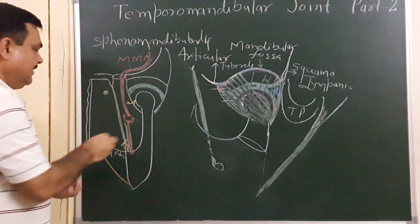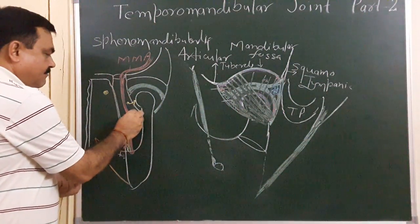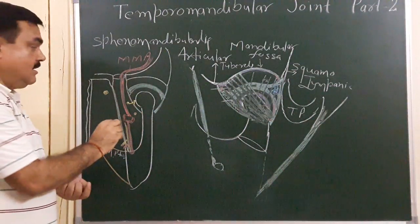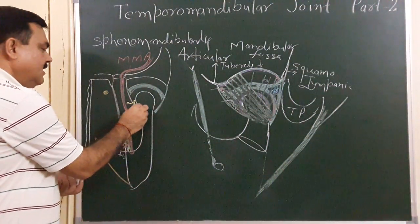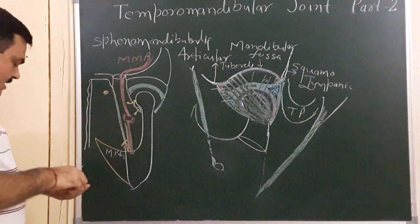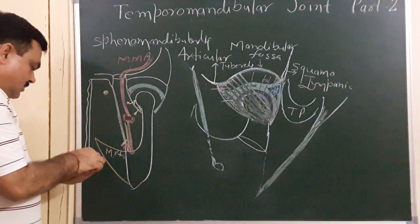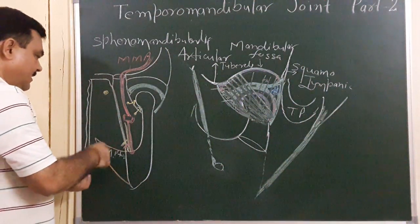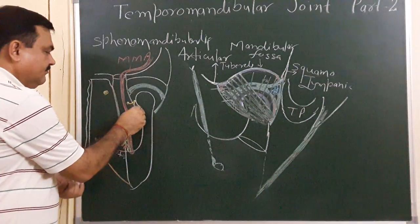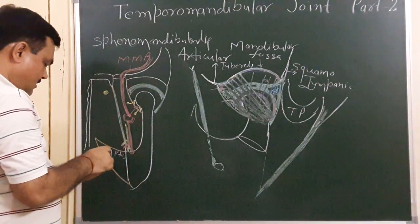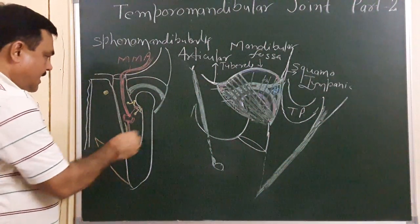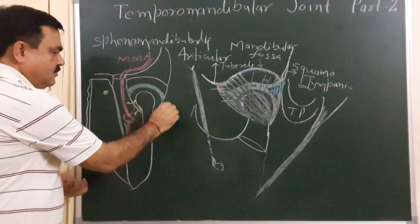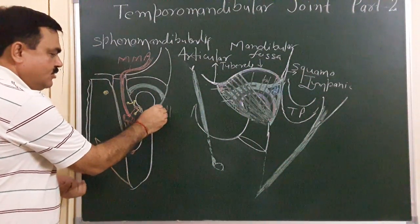Here is the masseteric branch of the anterior division of the mandibular nerve — it gives supply to this joint. This joint is also supplied by a branch of the maxillary artery. Here is the superficial temporal artery, which also gives supply to this joint.